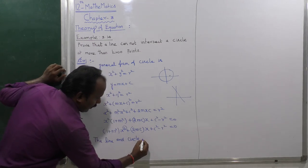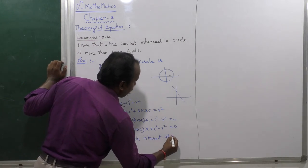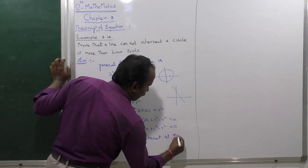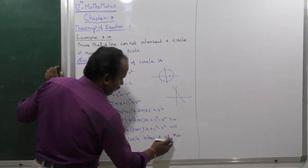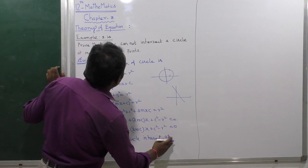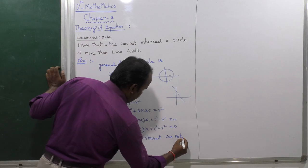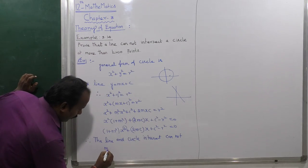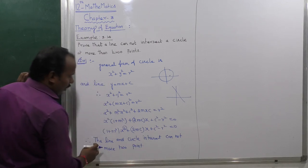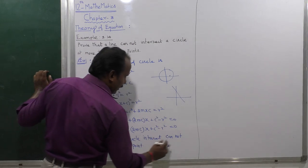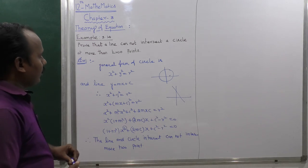Since a quadratic solution cannot have more than 2 roots, the line and circle cannot intersect at more than 2 points. That is the result of this proof.